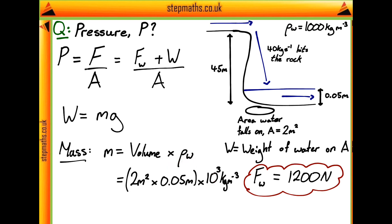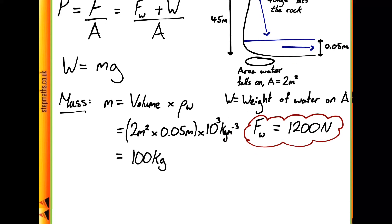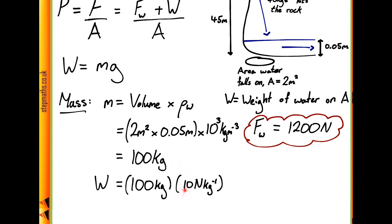Calculating our volume and multiplying by the density of 1,000 kg per metre cubed, we find that the mass of water sitting on top of the rock is 100 kilograms. Multiplying this by g = 10, we find that the weight is 1,000 newtons. So together we have a weight of 1,000 newtons and a force due to the water falling off the waterfall of 1,200 newtons.